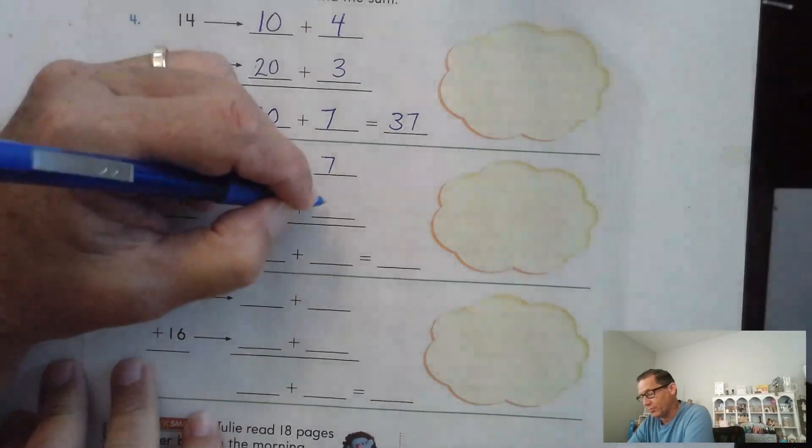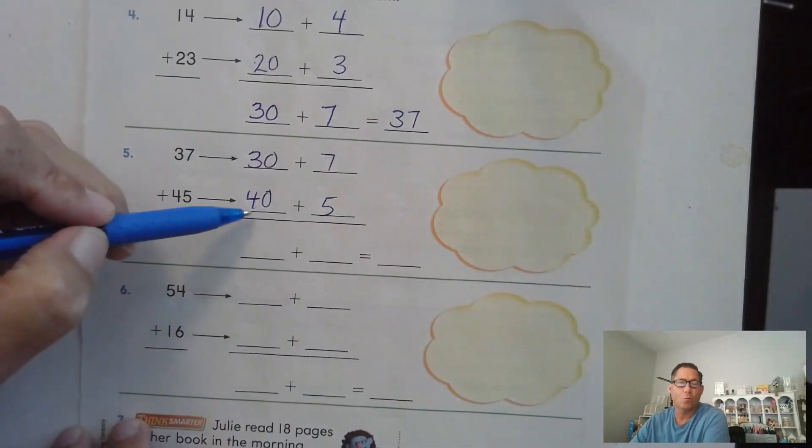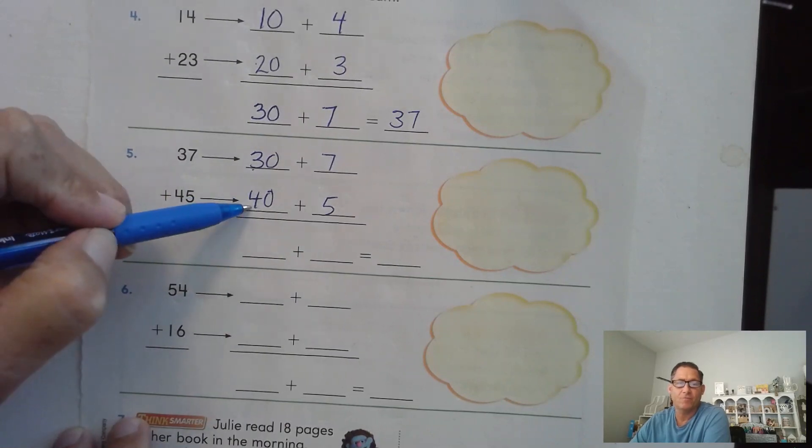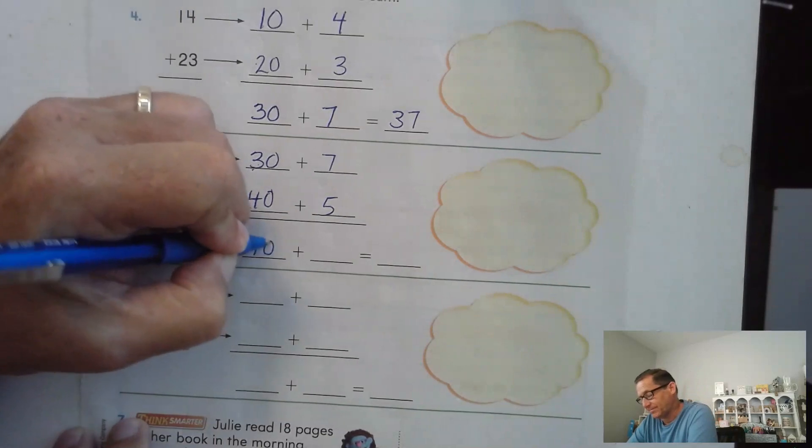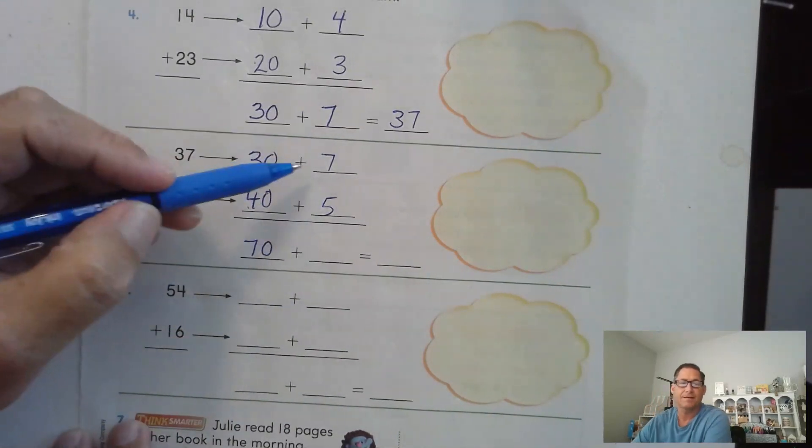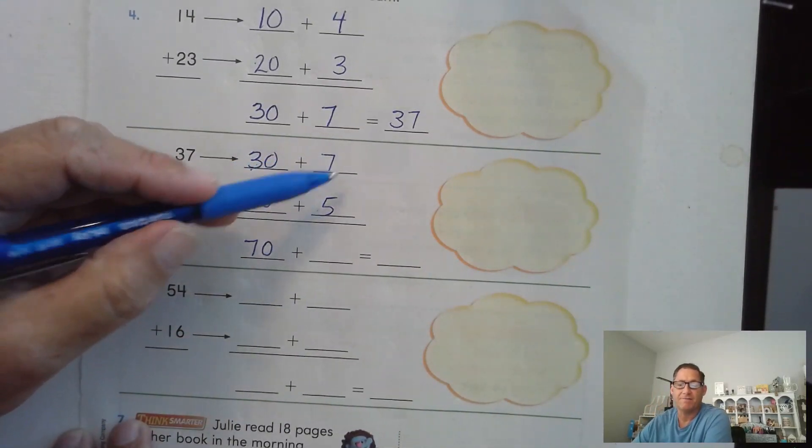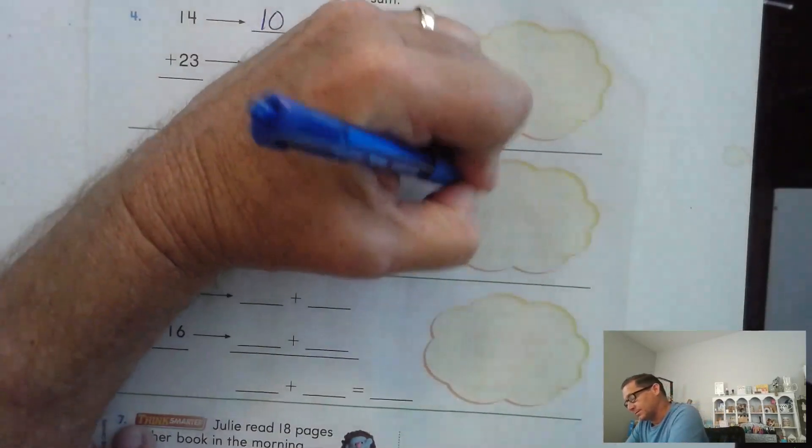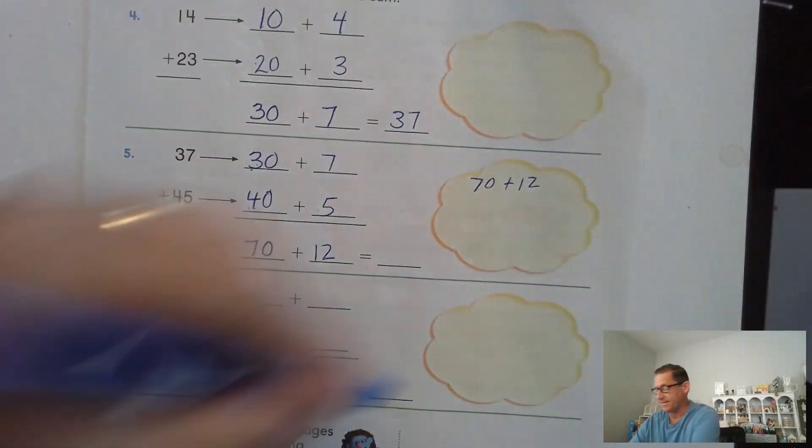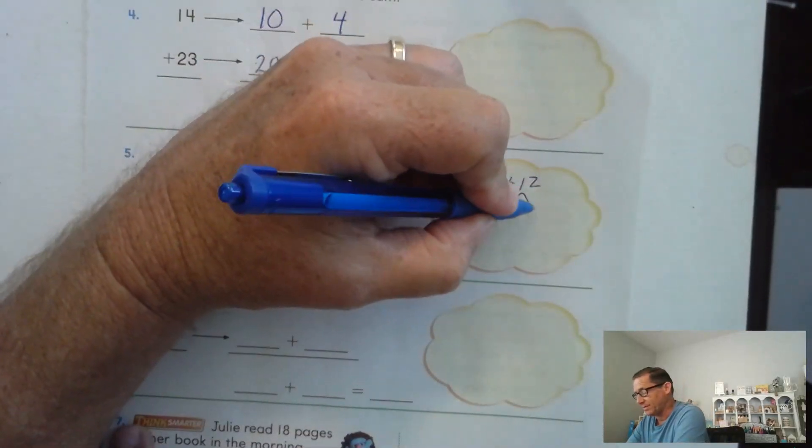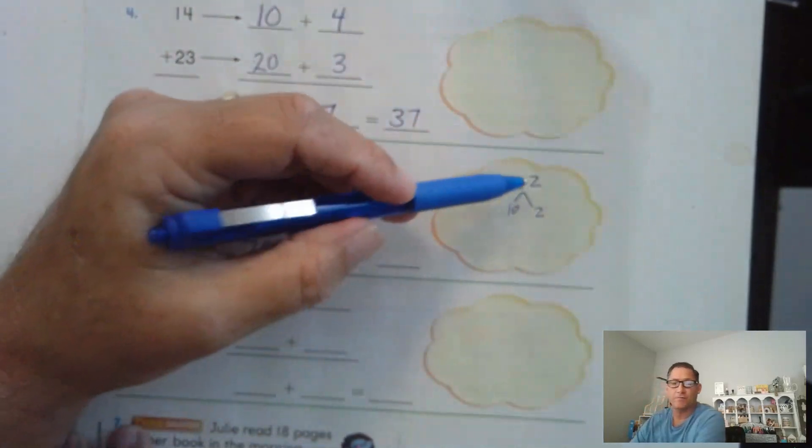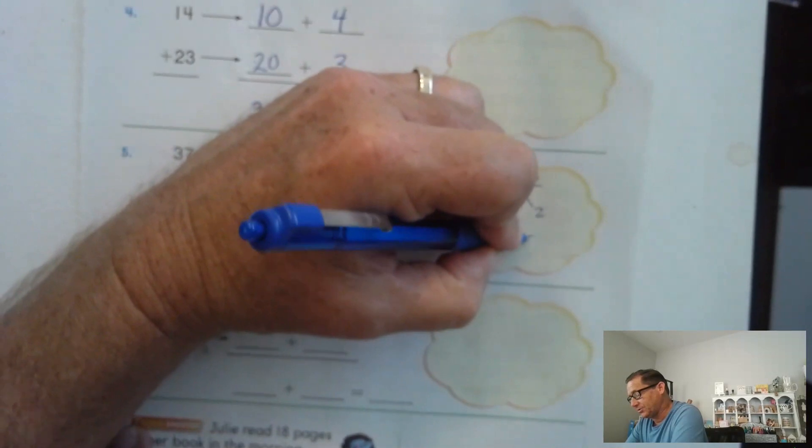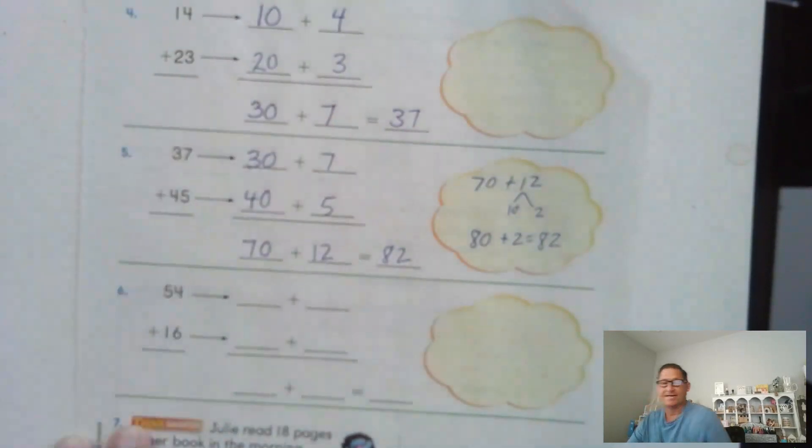45 is 40 plus 5. 4 tens gives me 40. 3 tens gives me 30. 4 tens plus 3 tens is 7 tens, or 70. 7 plus 5. Well, 5 and 5 is 10, plus 2 more is 12. So we can break up 70 plus 12 and think of 12 as 10 plus 2. So 70 plus 10 is 80 plus 2. 82.